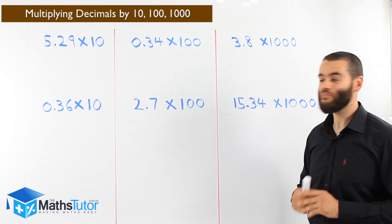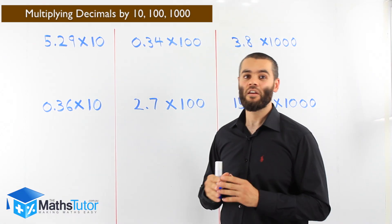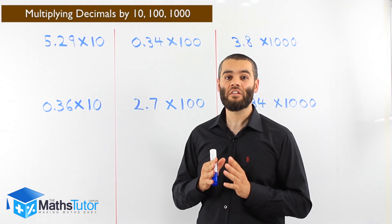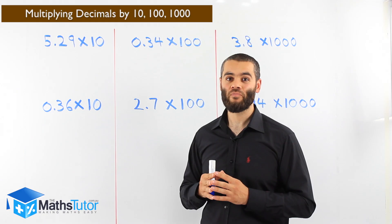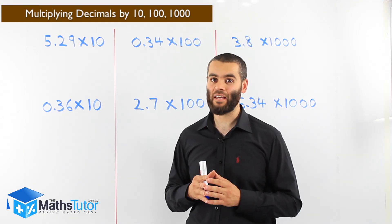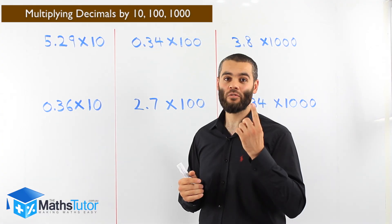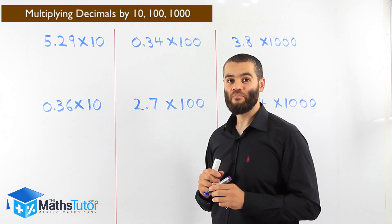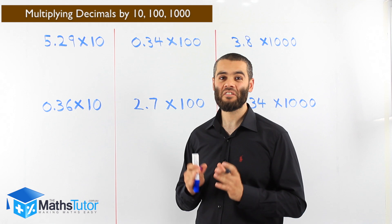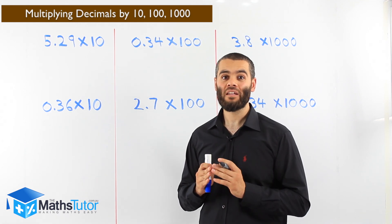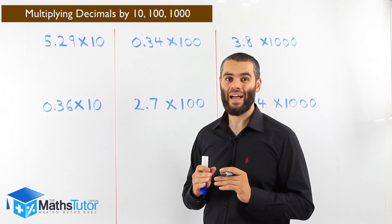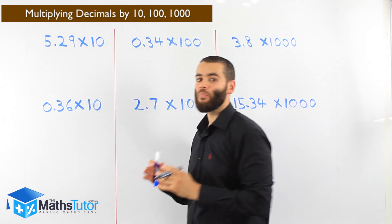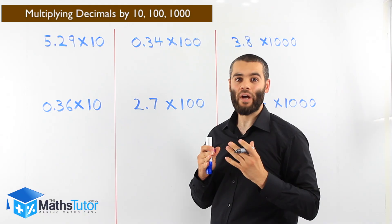We have an example: 5.29 times 10. What we've got to do is look at where the decimal point is. We're multiplying by ten — we ask ourselves, how many zeros does ten have? Ten has one zero. So we grab the decimal point and we're going to move it once to the right. Why once? Because ten has only one zero. When we multiply by ten, hundred, or thousand, we move to the right.